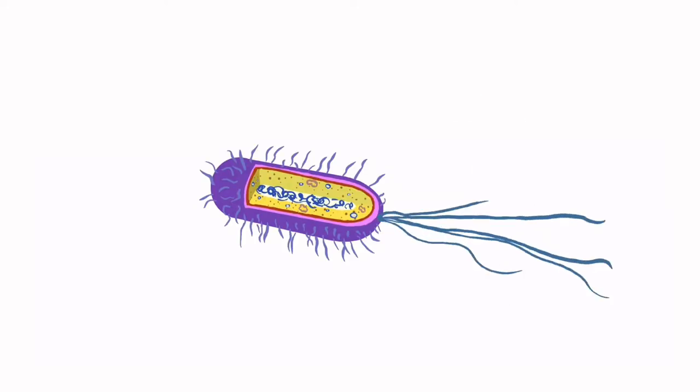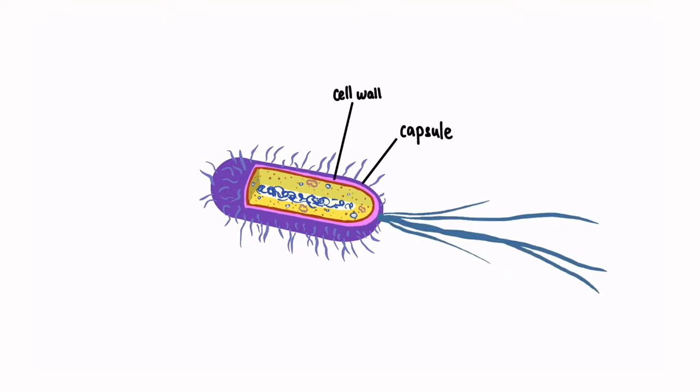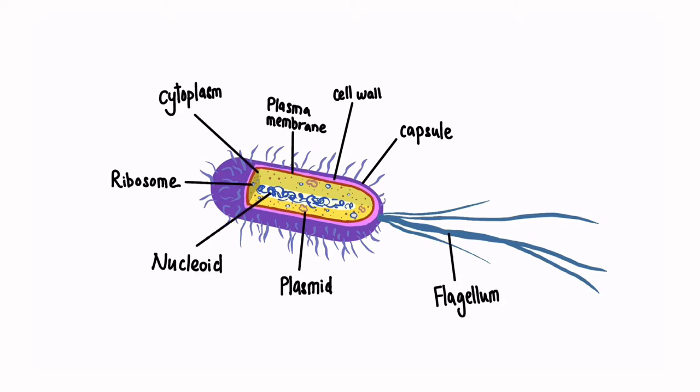This is a general structure of a bacterium. They are capsule, cell wall, plasma membrane, cytoplasm, ribosome, nucleoid, plasmid, and flagellum.